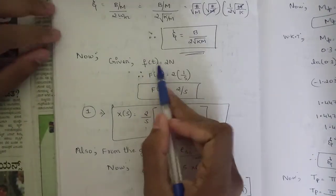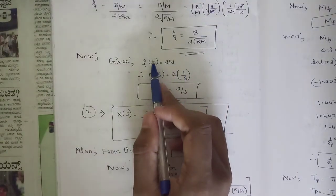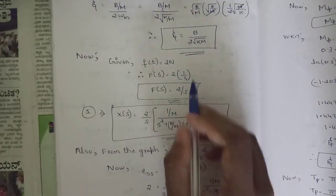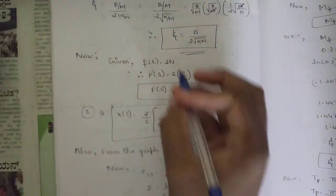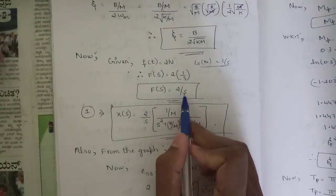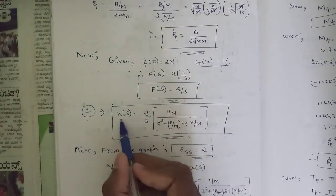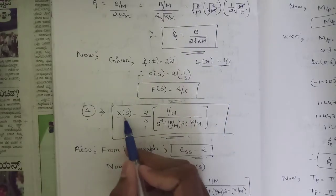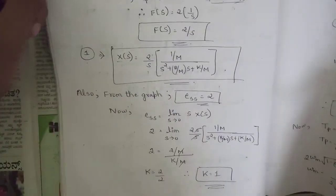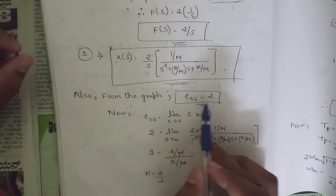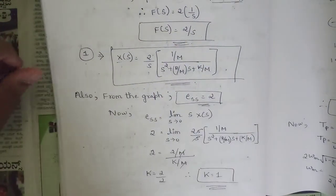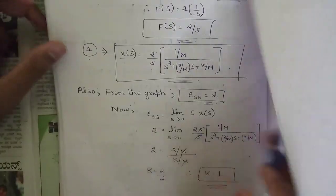The input f(t) = 2N, so F(s) = 2/s in the Laplace domain. Therefore X(s) = (2/s) · (1/m) / (s² + (b/m)s + k/m). From the graph, the steady-state error ess = 2. Using the steady-state error formula: ess = lim(s→0) s·X(s).